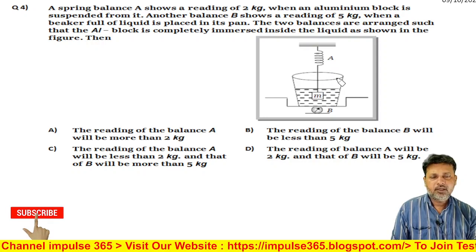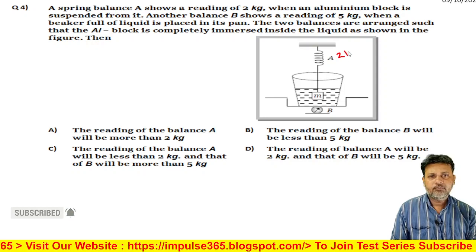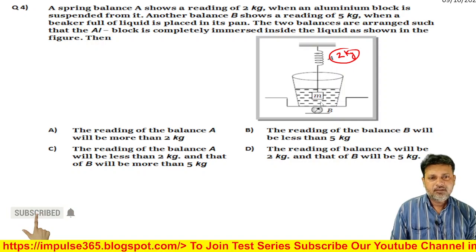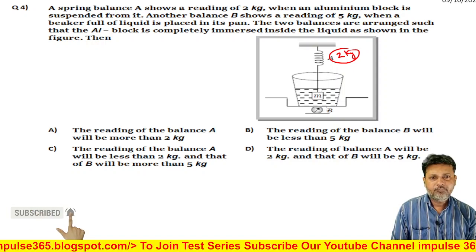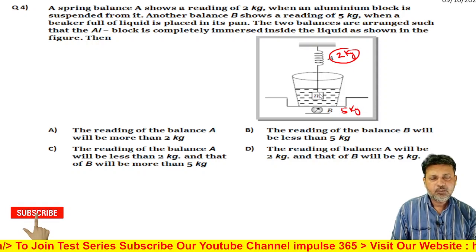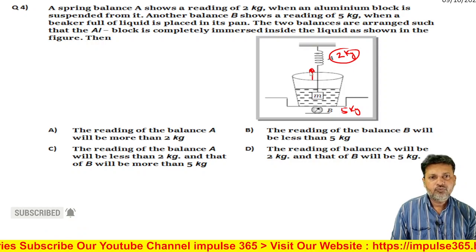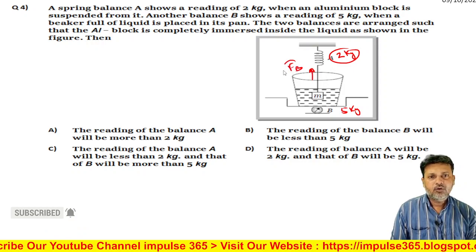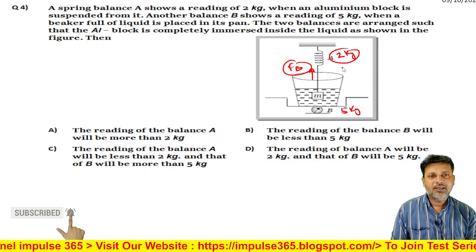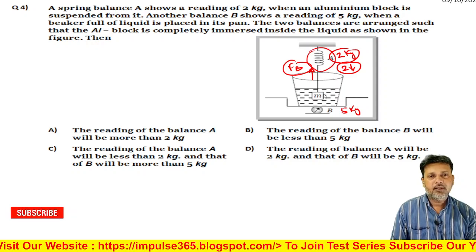When the block is in air, the mass shown was 2 kg, and balance B was showing 5 kg. As soon as we immerse this block, a buoyancy force acts upward on it, and because of this, the 2 kg reading of spring balance A will decrease — it will show less than 2 kg.